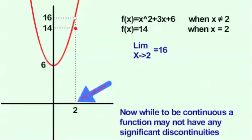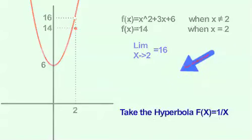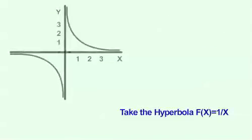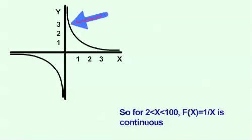However, no major discontinuities may exist, such as vertical asymptotes. A function may still be continuous on a limited range even if it does have discontinuities. Take a look at the hyperbola f of x equals 1 over x. There is a vertical asymptote at x equals 0. Besides that, there are no discontinuities. So for example, on the range x is greater than 2 and less than 100, the function is continuous.